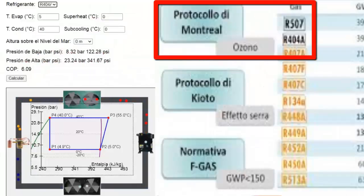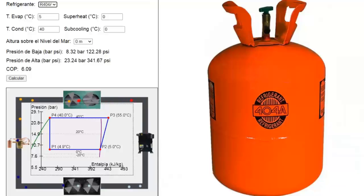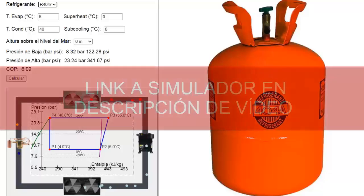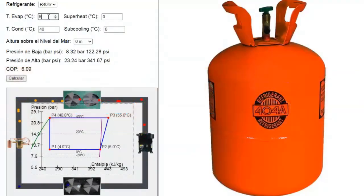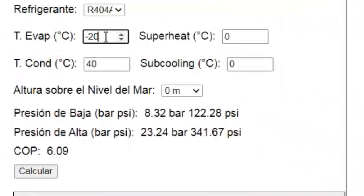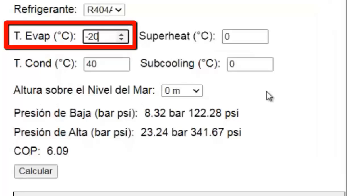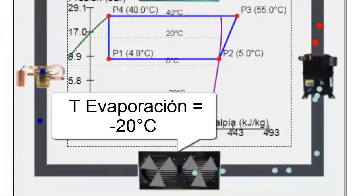Next, we will observe its behavior at different evaporation temperatures. Let's start by selecting an evaporation or cooling temperature of minus 20 degrees Celsius in the simulator. This value is typical for equipment where the evaporator is dedicated to freezing, such as for meats.